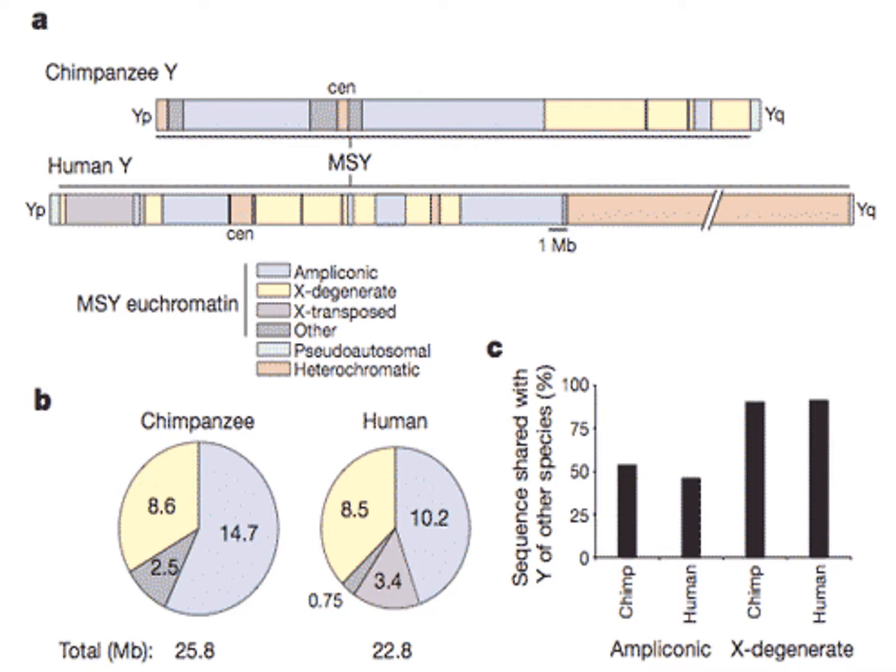As far as looking at specific genes, the chimp and human Y chromosome seem to have dramatic differences in gene content of up to 53%. In other words, the chimp is lacking approximately half of the genes found on a human Y chromosome.